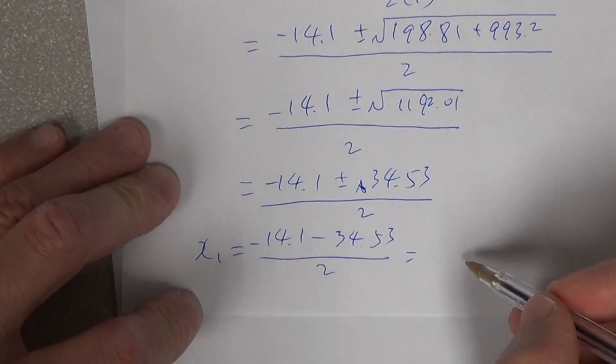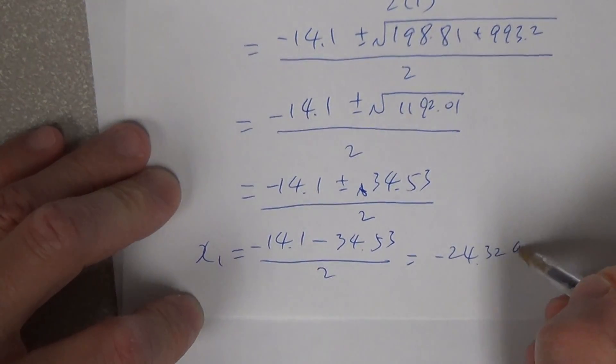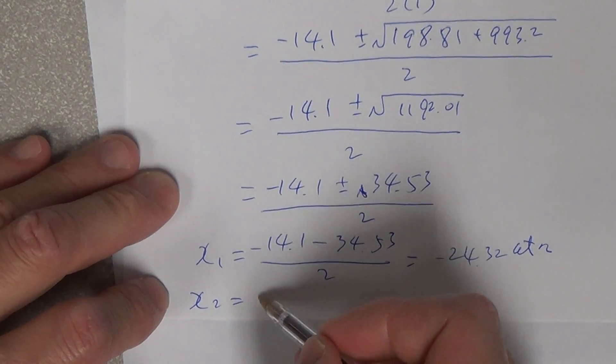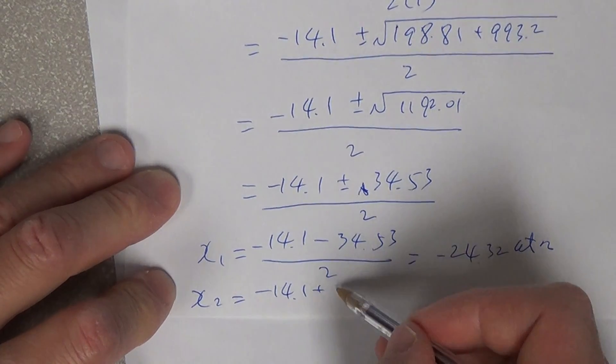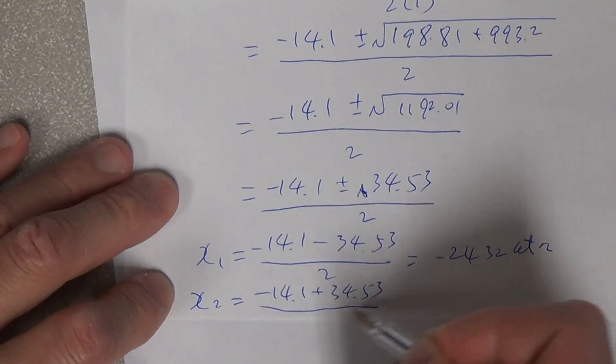So this gives us negative 24.32 atm, but we take the positive, that makes sense, negative 14.1 plus 34.53 divided by 2.